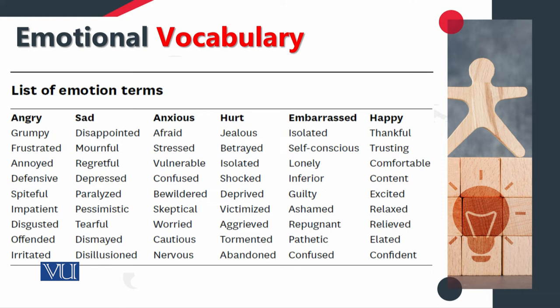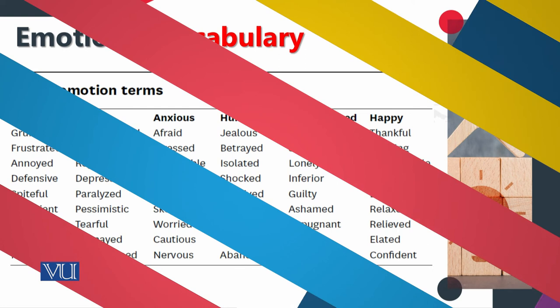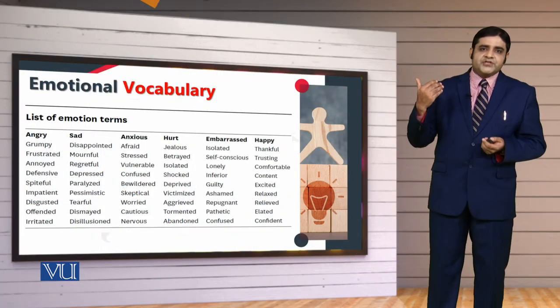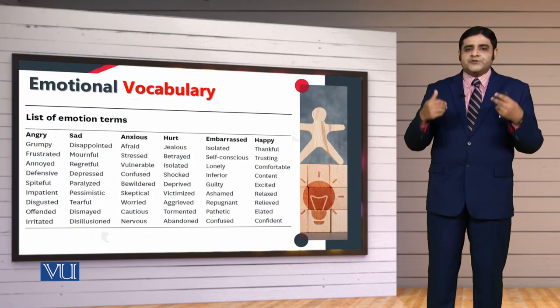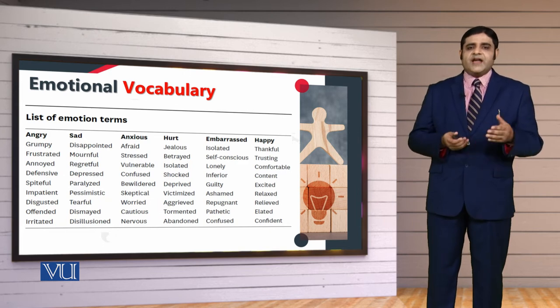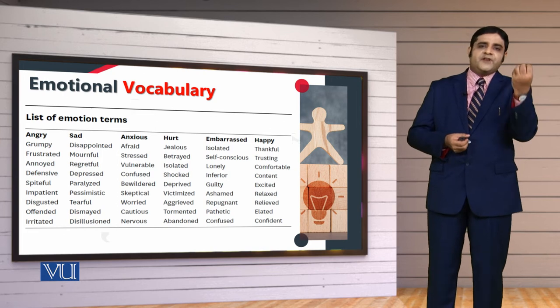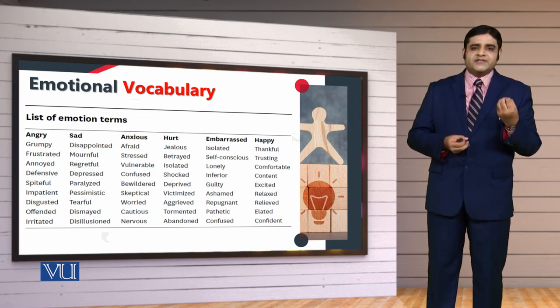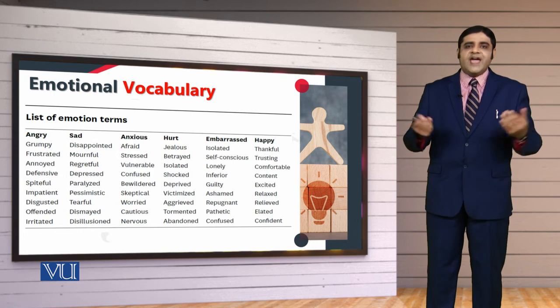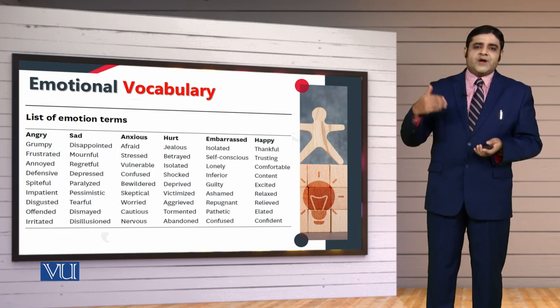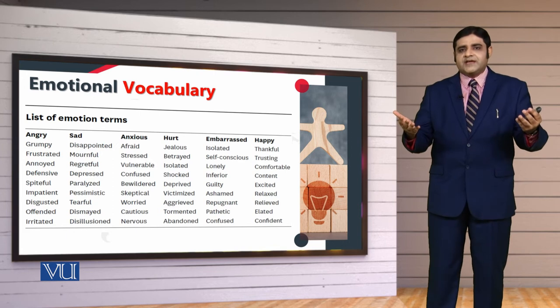These expressions will show you the emotion, but their implications are very different. The same is the case with anxious — it might mean afraid or vulnerable. The same is the case with hurt — you can be jealous, victimized, or betrayed. And the same is the case with happiness — you might be thankful, content, excited, or relaxed.